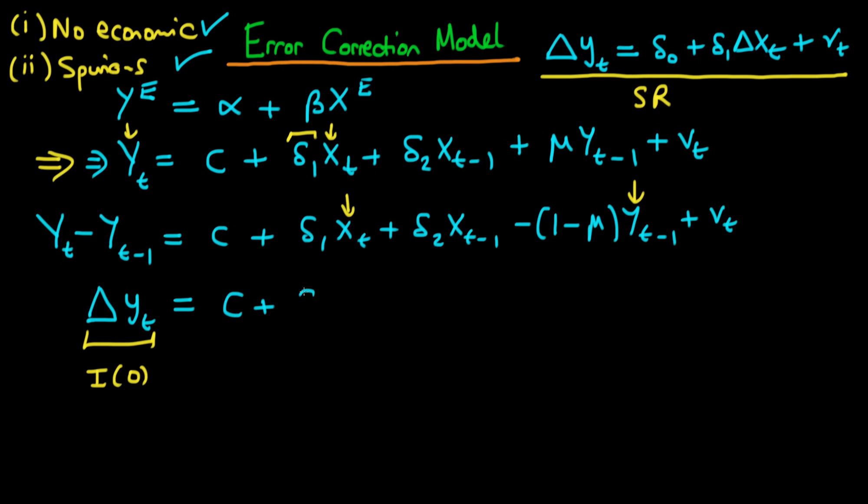So the way in which we think about combating this is we would like to be dealing with first differences of x. So we've got up here delta 1 times xt, what I'm going to do down here is I'm going to take away delta 1 times xt minus 1.